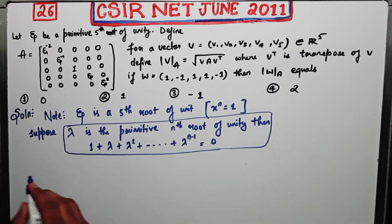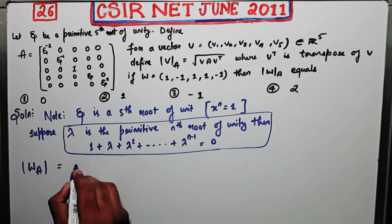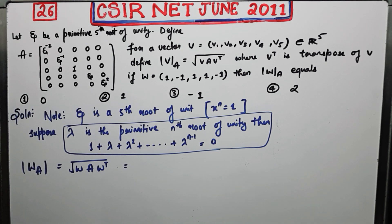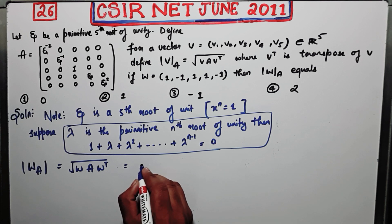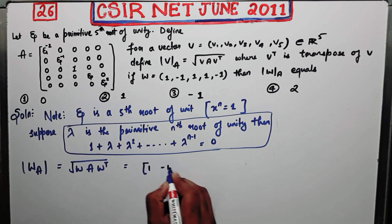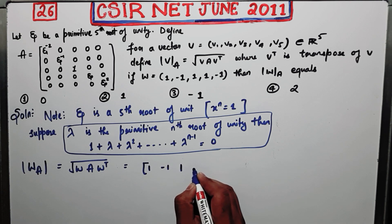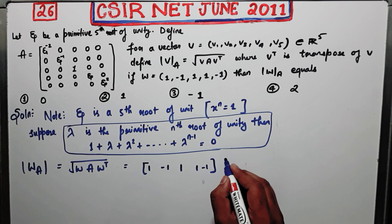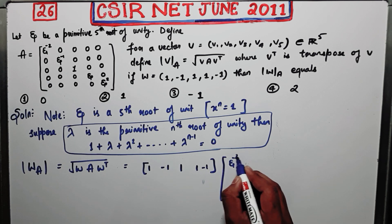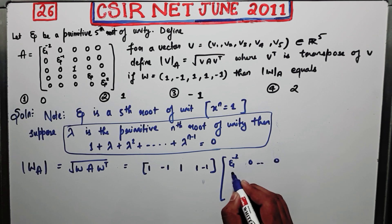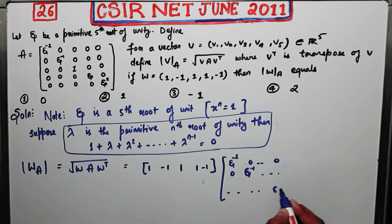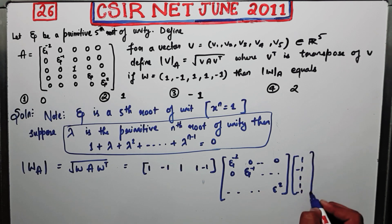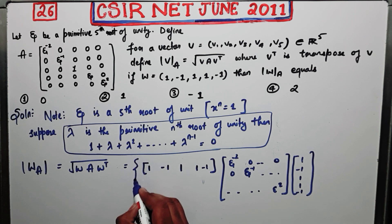Now, what do we have to calculate? We have to calculate |W|_A, which means W·A·W^transpose, then take the square root at the end. W is the vector [1, -1, 1, 1, 1, -1, 1] — I'll note this is a row matrix. A is the diagonal matrix with entries xi^(-2), xi^(-1), and so on. W^transpose will be the column vector [1, -1, 1, 1, 1, -1, 1].